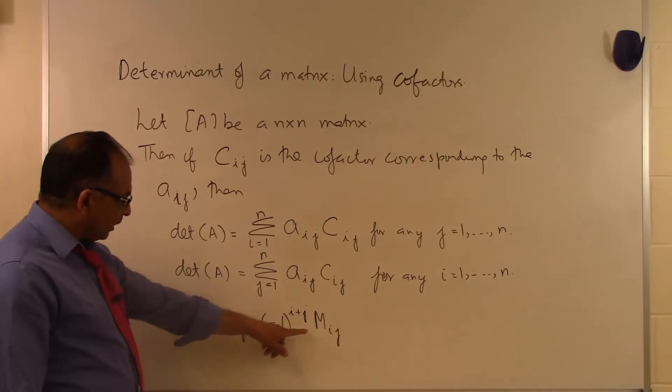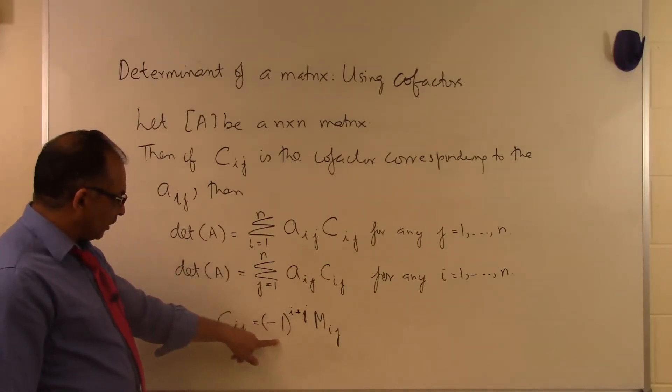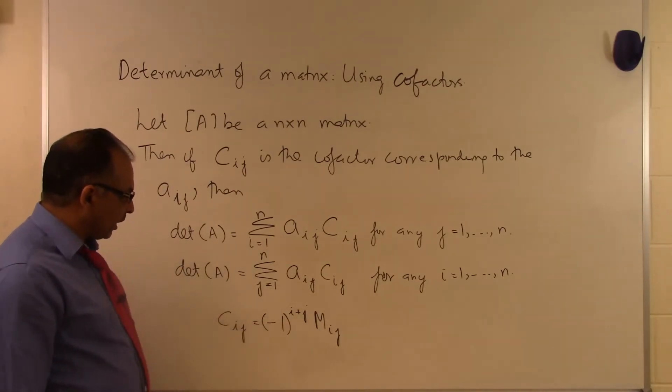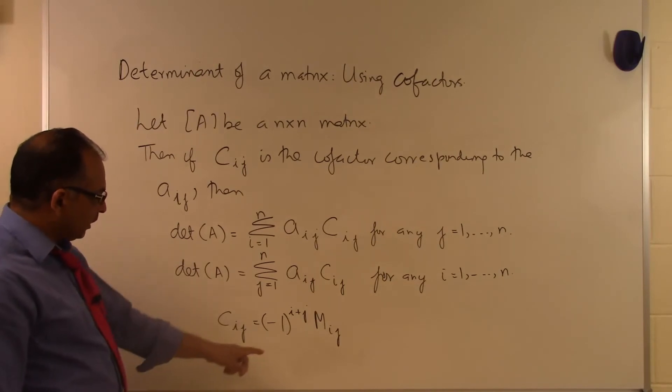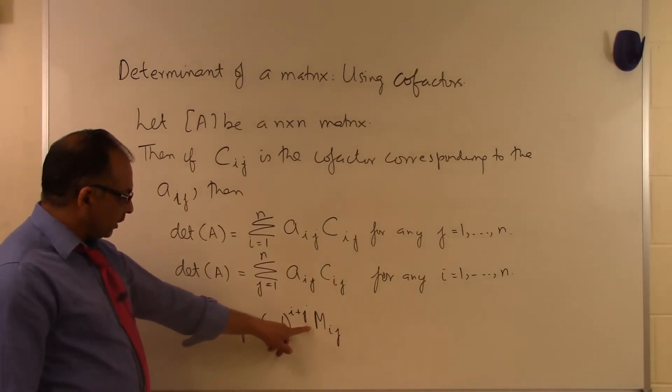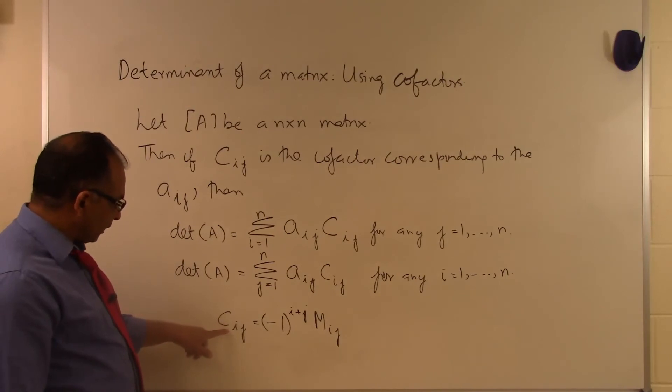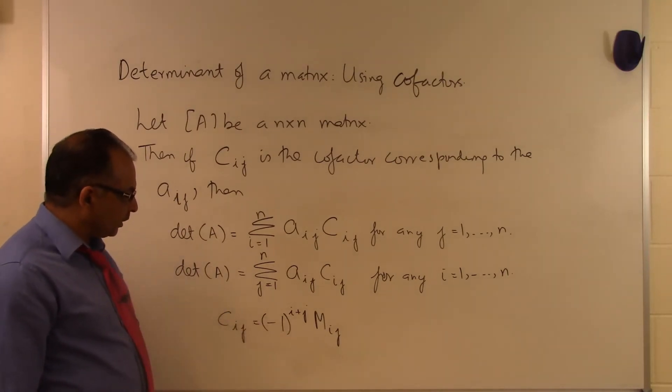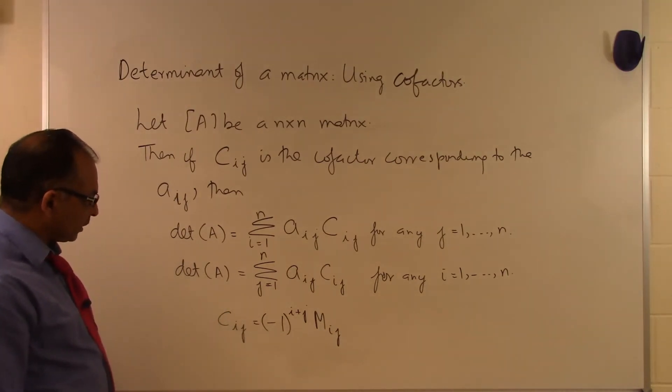The only difference between the minor and the cofactor is this sign, minus 1 raised to i plus j. If i plus j is even, then the cofactor is the same as the minor. If i plus j is odd, then the cofactor is negative of the minor corresponding to the Aijth element.